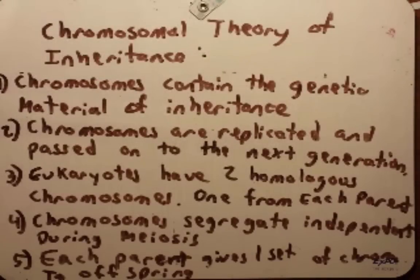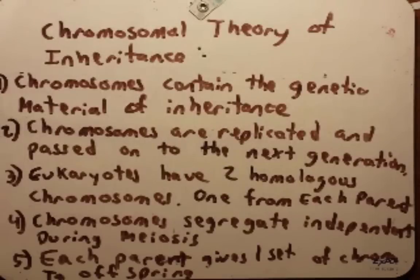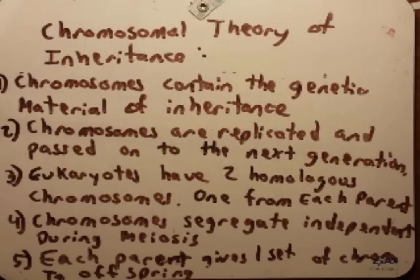This theory still holds up and keeps expanding as more knowledge comes in. Let's go over the five principles. The first is that chromosomes contain the genetic material of inheritance. We know from previous lectures that DNA is in the chromosomes and that the genes are within the DNA, so the chromosomes are the vehicle that carries out the transfer of inheritance. The second principle is that chromosomes are replicated and passed on to the next generation — copied during replication, and as the cell divides, a copy moves on to the next cell, including into the gametes.